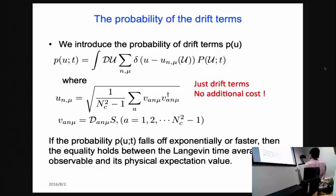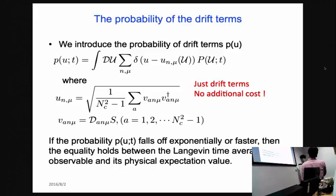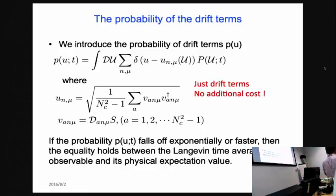The drift force in QCD or gauge theory is defined such that each link has N_c²−1 components. We define the norm of the drift force for each link, then form a probability distribution by calculating the norm of the drift at every hundred or thousand steps and constructing a histogram from the data.